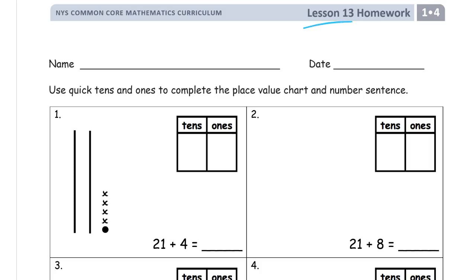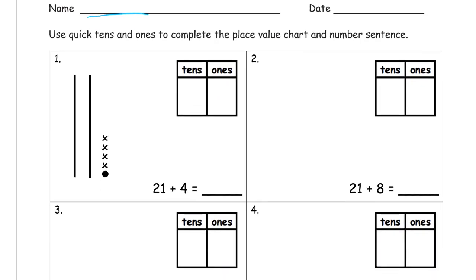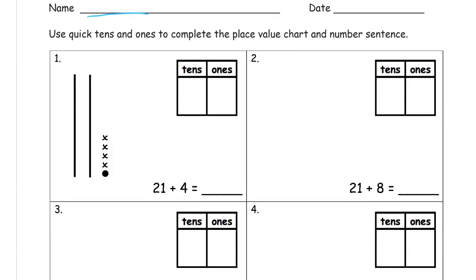Welcome to the homework for lesson 13. This is module 4 of first grade. Put your name here first. We're drawing quick tens now and working with place value charts and also finishing equations. It says use quick tens and ones to complete the place value chart and number sentence.